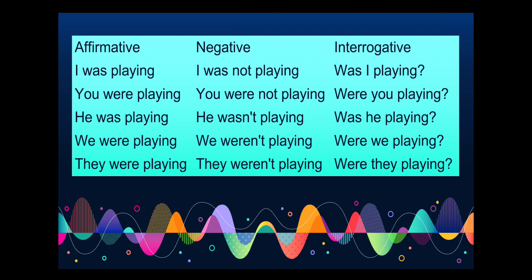Affirmative: I was playing, you were playing, he was playing, we were playing, they were playing. Negative: I was not playing, you were not playing, he wasn't playing, we weren't playing, they weren't playing. Interrogative: Was I playing? Were you playing? Was he playing? Were we playing? Were they playing?